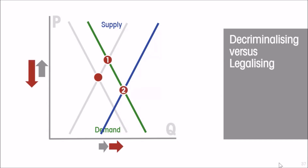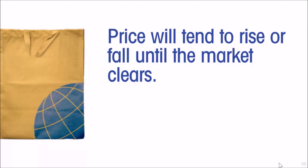When that takes place, the shift to the right of the supply curve is going to push price in the opposite direction. The shift of the demand curve to the right would tend to increase price, but only by a small amount. The shift of the supply curve is going to push price down and also increase the market size. So while both decriminalization of use and legalization of growth and distribution are going to increase the size of the market, they have opposite effects on price. This is an exercise to show how useful the market model is — we conclude that price will tend to rise or fall until the market clears.